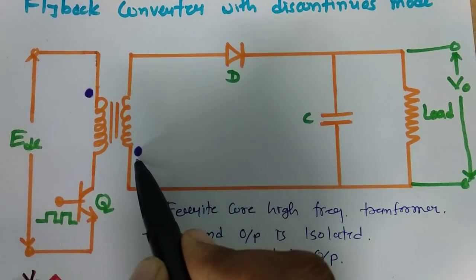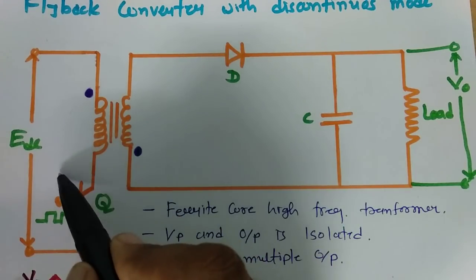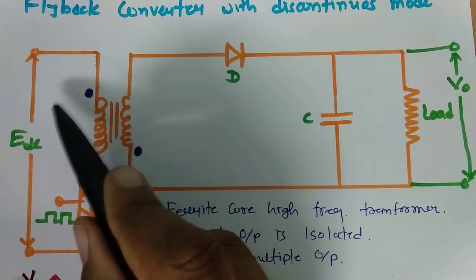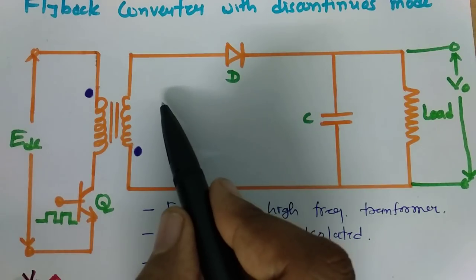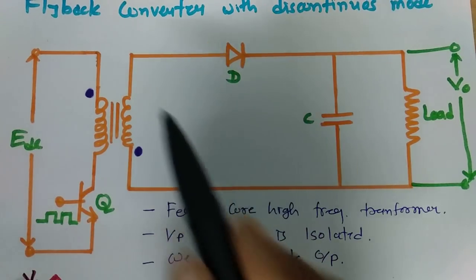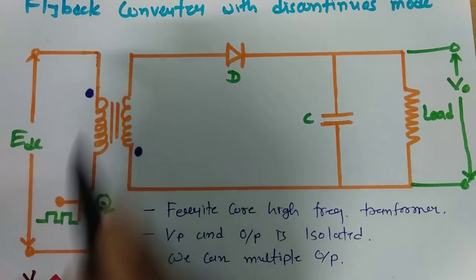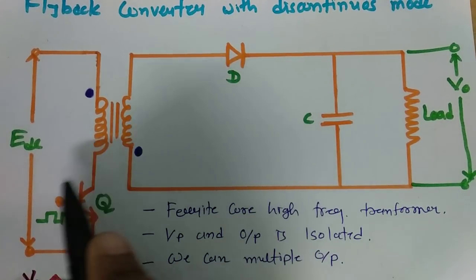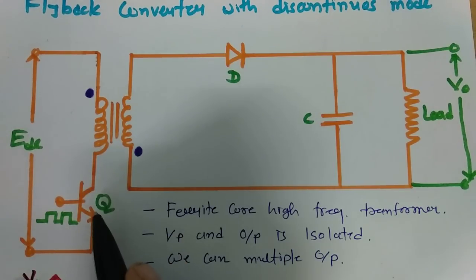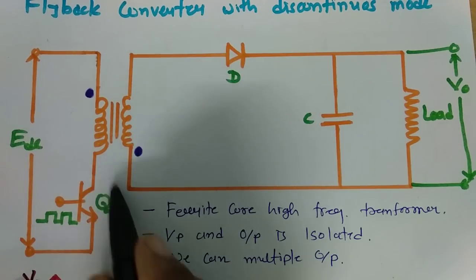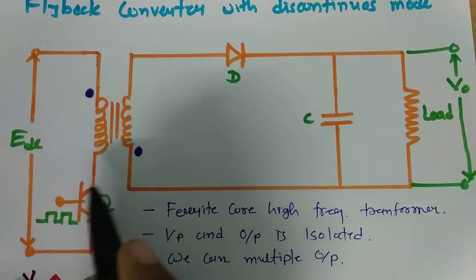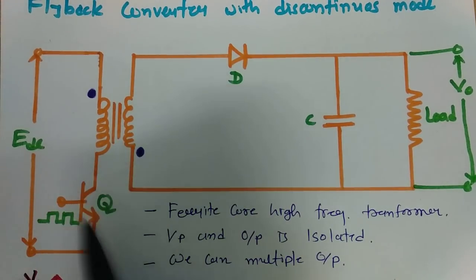The basic specialty of this transformer is that the winding is in the opposite direction. When primary current is flowing, secondary current is not flowing. When primary current stops flowing, there will be demagnetization of the winding and secondary current will flow. A switch in this circuit is controlled by a signal — when the pulse is on, the switch is on, and when the pulse is off, the switch is off.